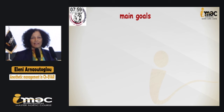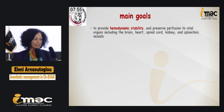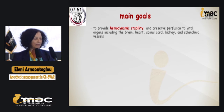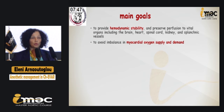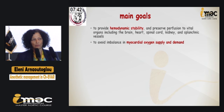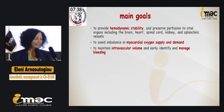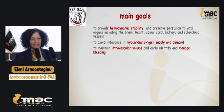The main goals of our anesthetic plan are to provide hemodynamic stability and preserve perfusion to vital organs including the brain, heart, spinal cord, kidney, and splanchnic vessels. We also aim to avoid imbalance in myocardial oxygen supply and demand — I would like to remind you that two-thirds of these patients have coronary disease. Additionally, it is very important to maintain intravascular volume and manage bleeding, which I will discuss further.